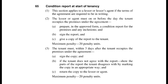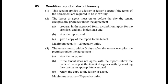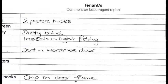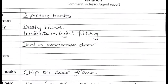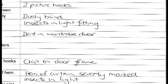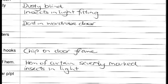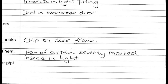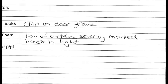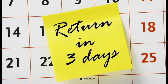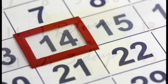Under the Queensland Tenancy law, it is a requirement to have the report completed as there are penalty provisions for the property owners or managers for not completing it. For the Tenants, they need to inspect the premises and comment on any item if they believe has been missed, or disagree with anything, or if it does not reflect the accurate condition of the premises. Tenants need to sign the report and return a copy to the property owner or manager within three days. The property owner or manager then needs to send a copy of the final report to the Tenant within 14 days and keep a copy for themselves.